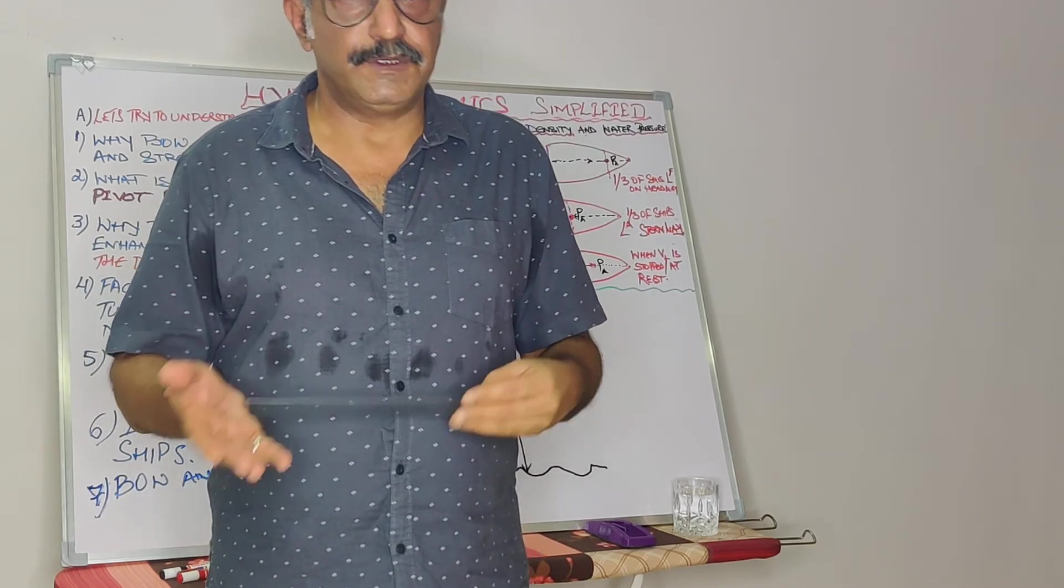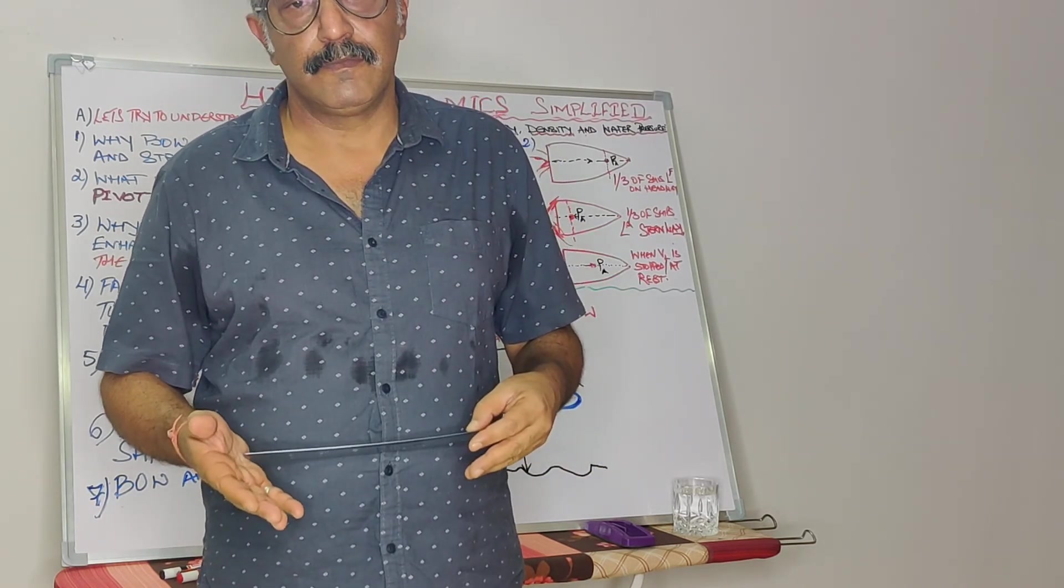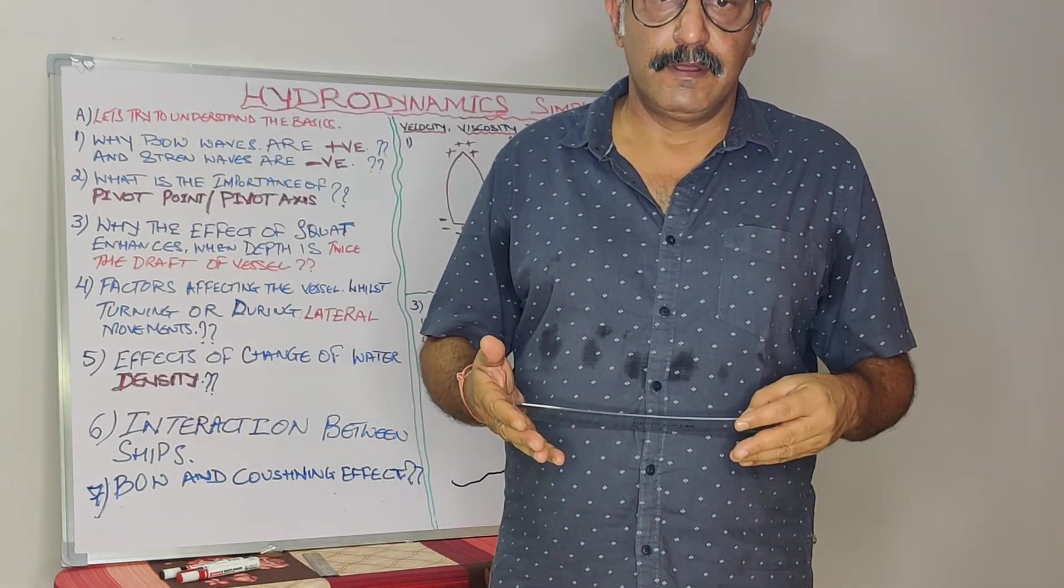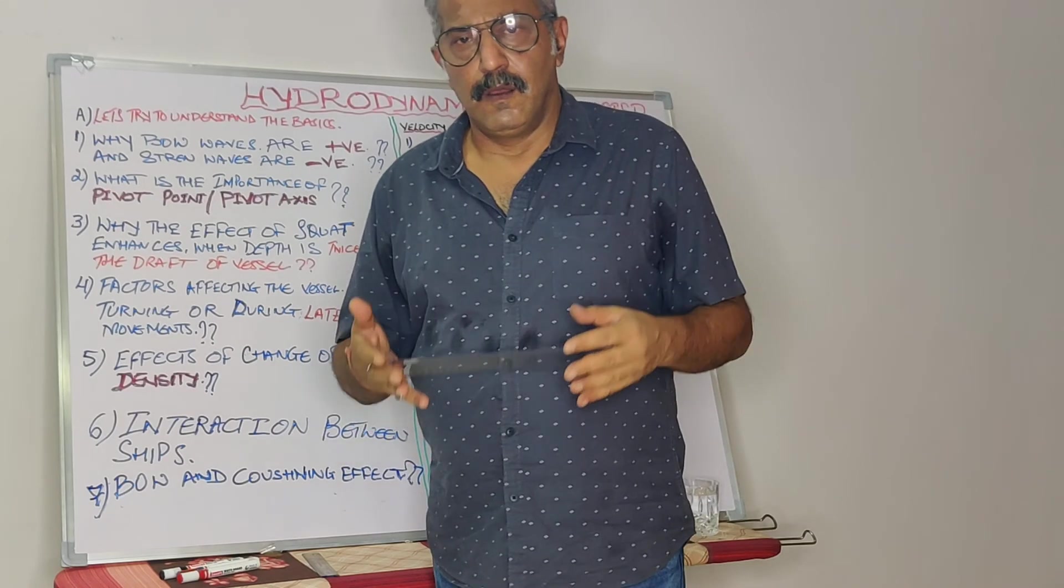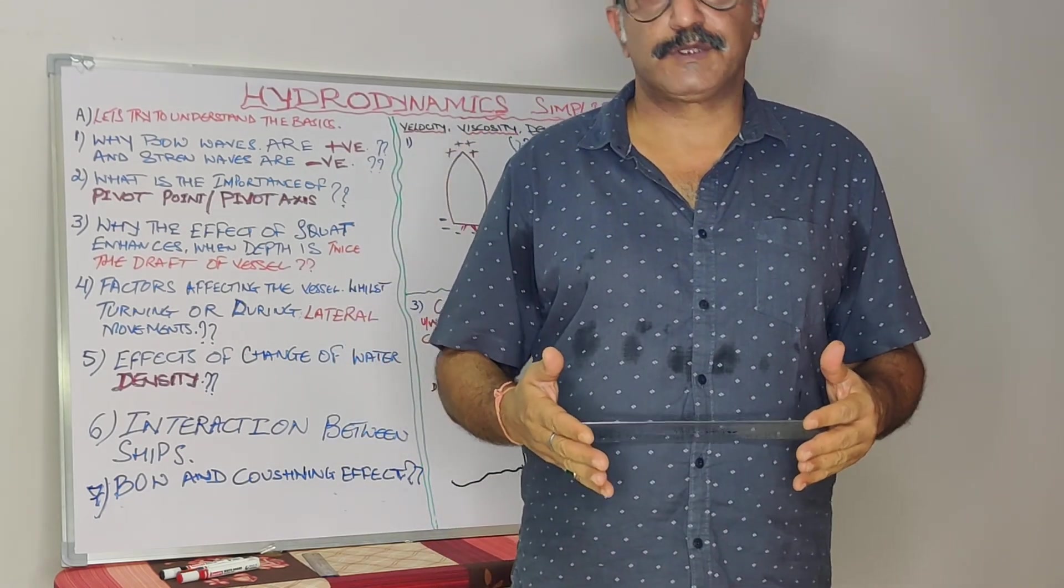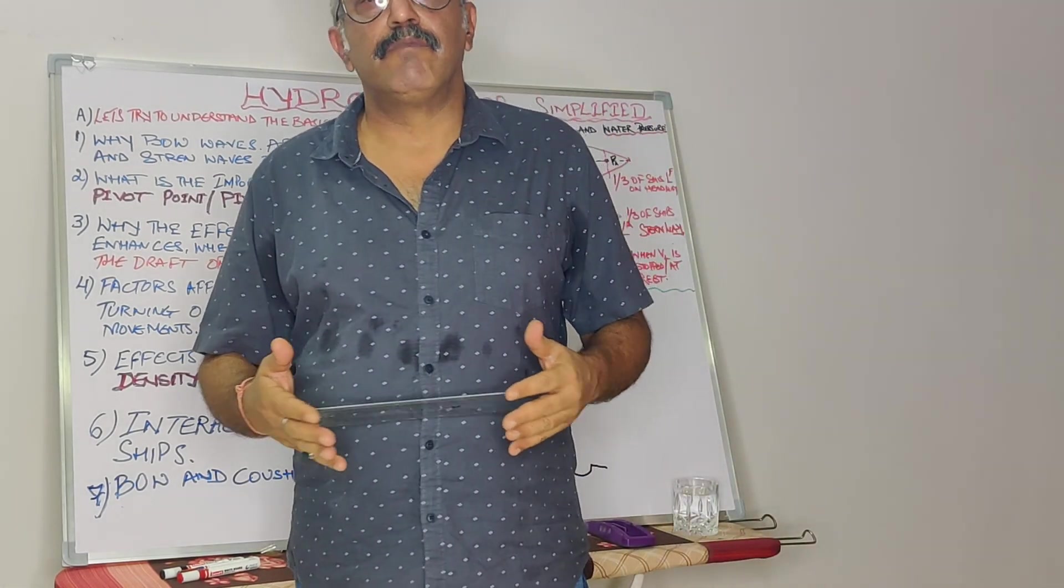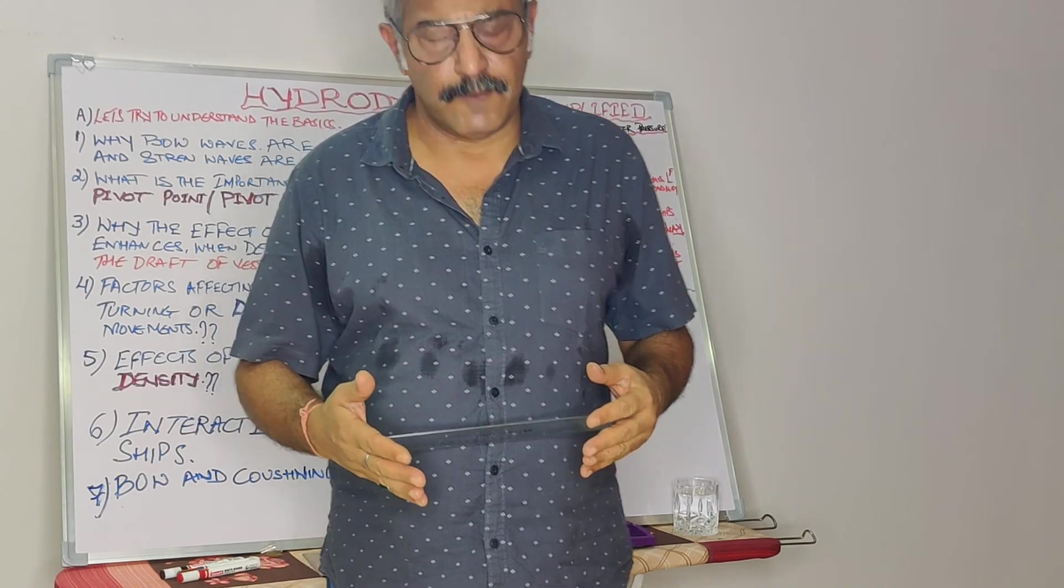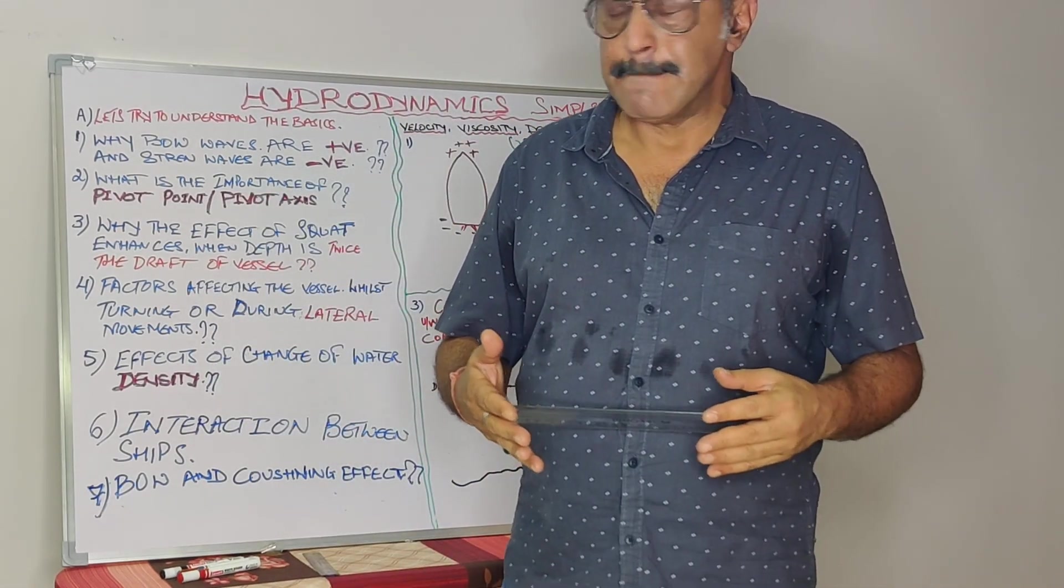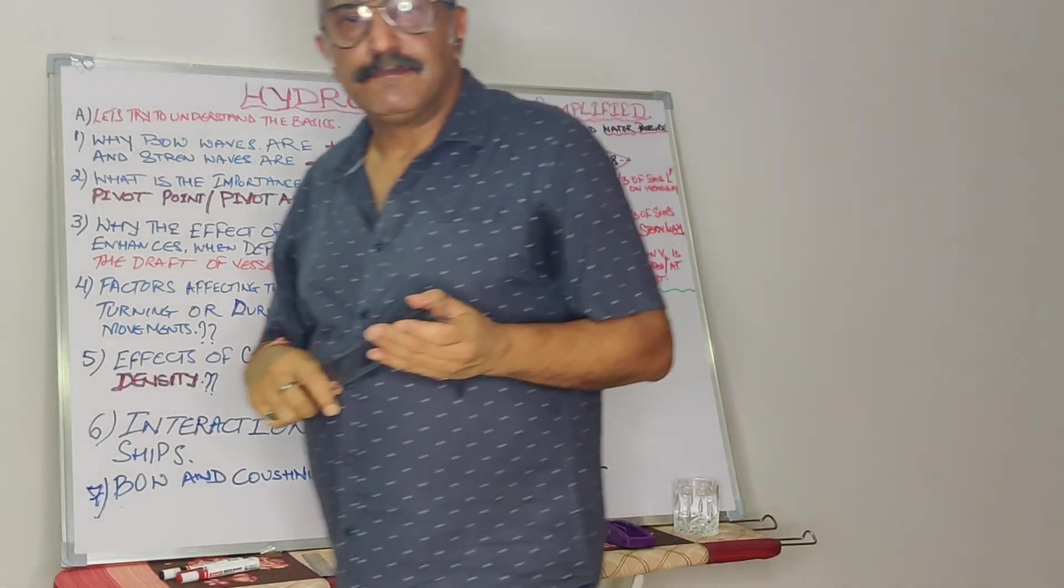Few things which we have received is the block coefficient as well. For tankers, the block coefficient is more than 0.7, and a vessel which has got a block coefficient of more than 0.7 will squat by head, and the vessel which has got a block coefficient of less than 0.7 will squat by stern. Thank you.